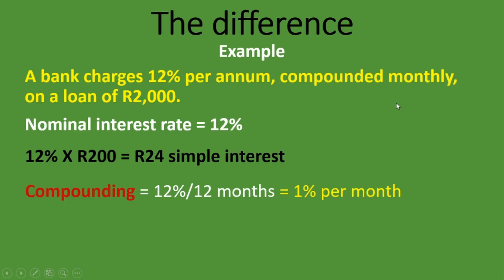But we know there is a compounding effect, which is why the nominal interest rate is not the most accurate rate to tell us how much we're actually paying as a percentage. Because of compounding, we are actually paying 1% per month. So if we are paying 1% per month, how much is the effective interest rate? That is what we need to calculate — that is the main difference between nominal and effective interest rate.